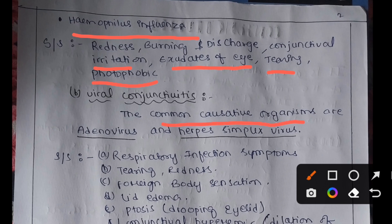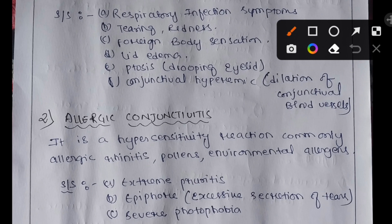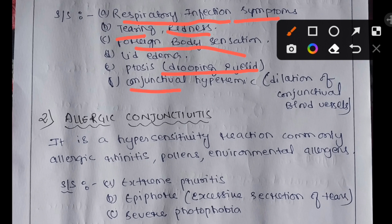Viral conjunctivitis, which also falls under microbial conjunctivitis, has common causative organisms including adenovirus and herpes simplex virus. Its signs and symptoms include respiratory infection symptoms, tearing, redness of the eye, foreign body sensation, eyelid edema — slight swelling of the eyelid — ptosis meaning drooping of the upper eyelid downwards, and conjunctival hyperemia, which means dilation of conjunctival blood vessels.